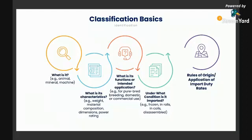Next, you ask yourself under what condition is it imported? Is it frozen, in rolls, in coils, or disassembled? These are examples of the condition segment. For frozen, it's common for food products — on the Harmonized System there are several conditions including chilled, fresh, and frozen for both processed and unprocessed food products. For rolls and coils, this is an example of the description for industrial goods like steel products or iron.